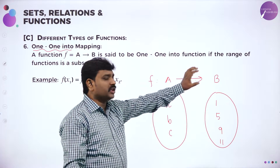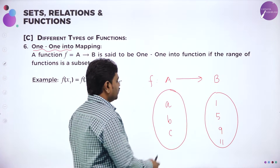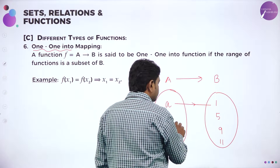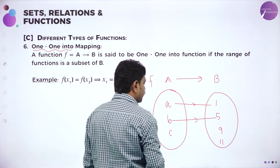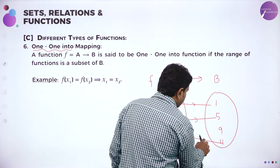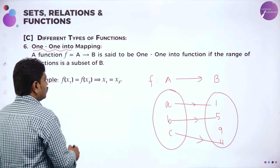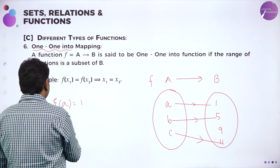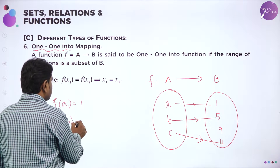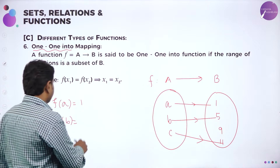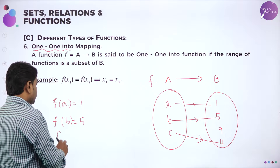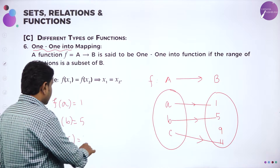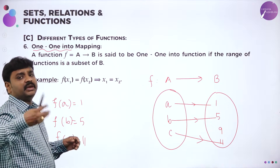Domain means first set, codomain means second set. Say A is mapping to 1 — image of A is 1. B is mapping to 5 — image of B is 5. And C is mapping to 11. So now: image of A is 1, image of B is 5, and image of C — C is going to 11. So different elements A, B, C have different images.